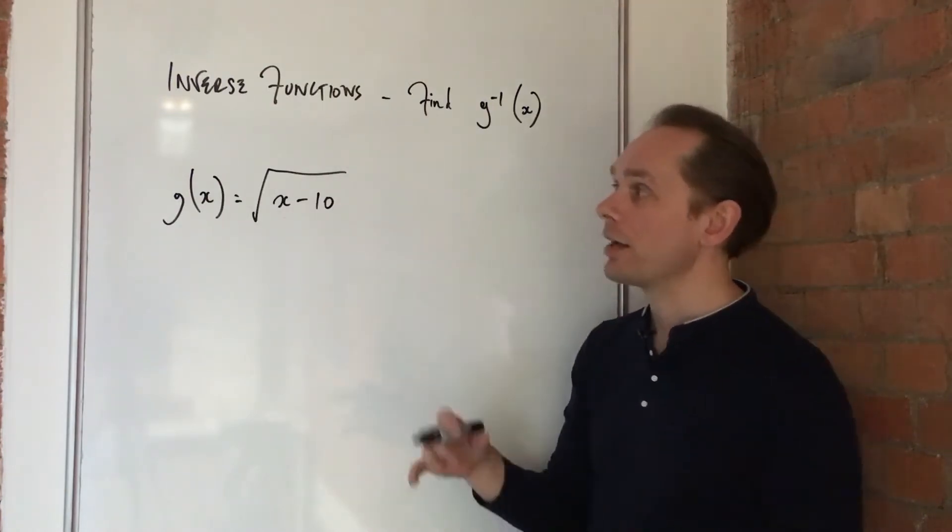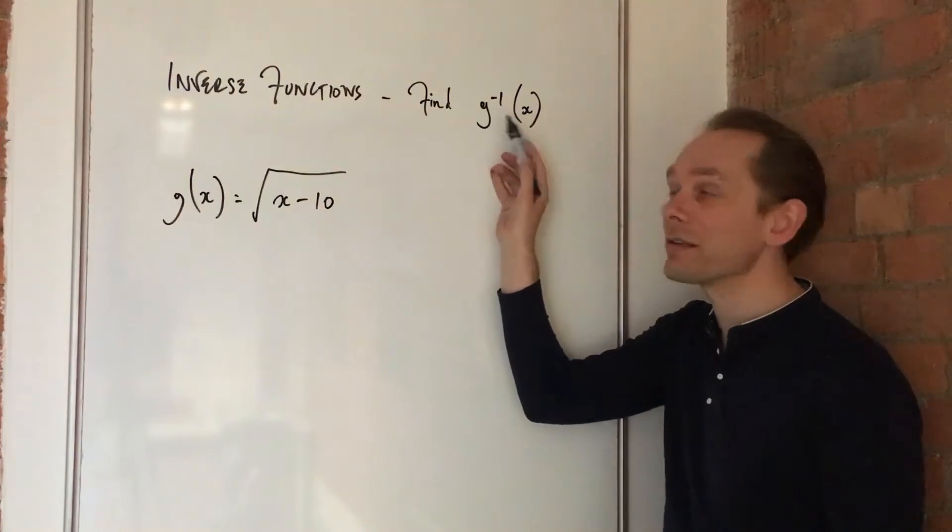So the square root of x minus 10. And you're asked to find the inverse, often written like this, g to the minus 1 of x.